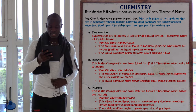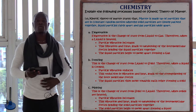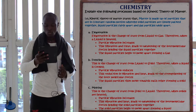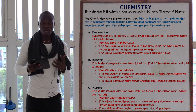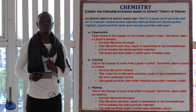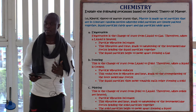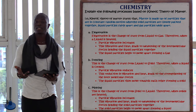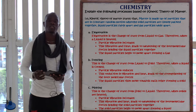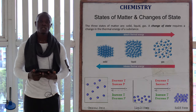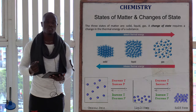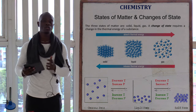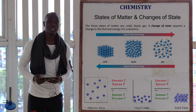The second question asks us to explain the following processes based on kinetic theory of matter. The main point here is kinetic theory of matter. We have been asked to explain evaporation based on kinetic theory of matter. The kinetic theory of matter simply states that matter is made up of tiny particles that are in constant random motion. These particles move as the state changes from solid to liquid or back from liquid to solid.